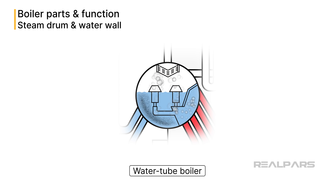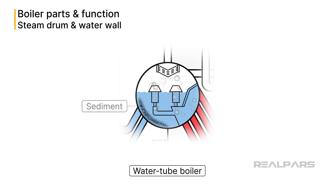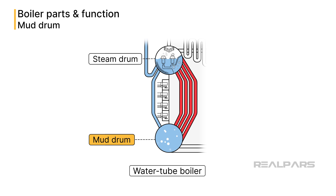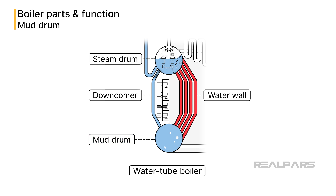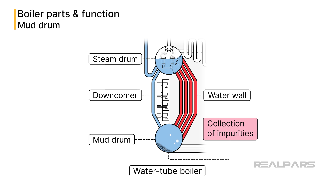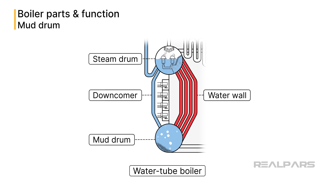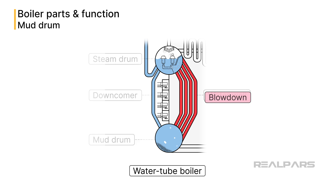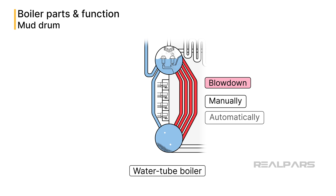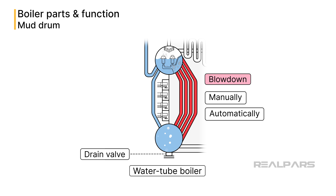If more solutes enter the boiler along with the feed water, these solutes will be concentrated and may reach a point where their solubility in water decreases, and they are separated from the water as sediment. The mud drum, which is located at the bottom of the boiler and is connected to the steam drum above it through the downcomer and water wall tubes, is filled with water and serves as a collection point for dirt and impurities. Over time, these settle at the bottom of the mud drum. To prevent this, the solutes in the water should be limited through a process called blow-down, which is controlled by removing part of the boiler's concentrated water, either manually or automatically through the drain valve at the point with the highest concentration of solutes.